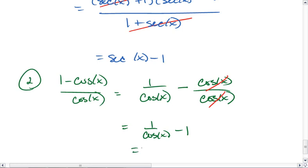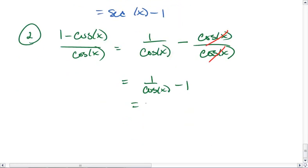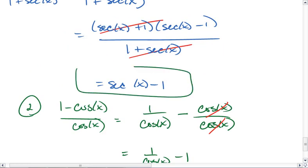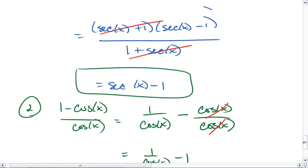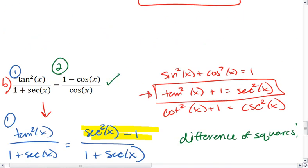And 1 over cosine x is the reciprocal property with secant, so we get secant x minus 1. Thus, side 1 matches side 2, and we've shown that since both sides equal secant x minus 1, then they are indeed equal to each other.